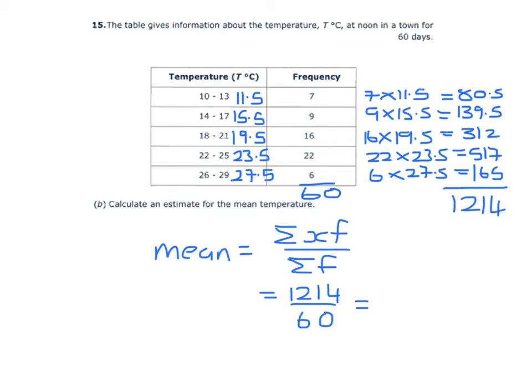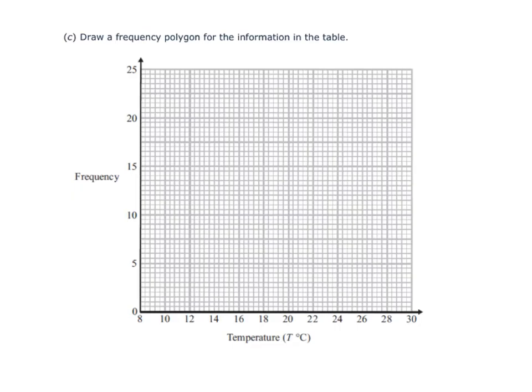To draw a frequency polygon, we mark the midpoints and the frequency. So that's 11.5, 7, which will be here. 15.5, 9, which will be here.